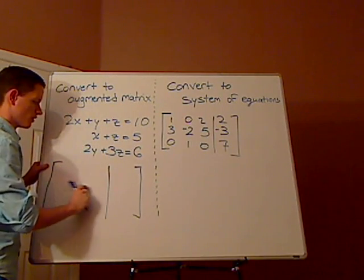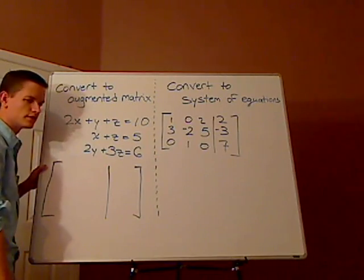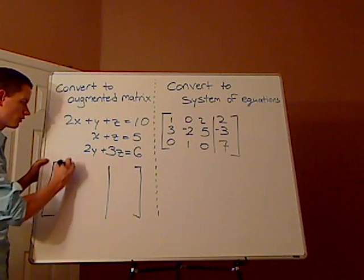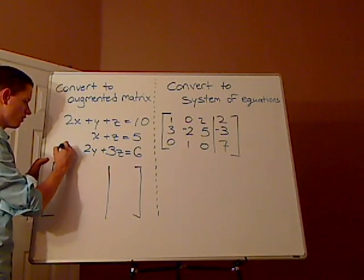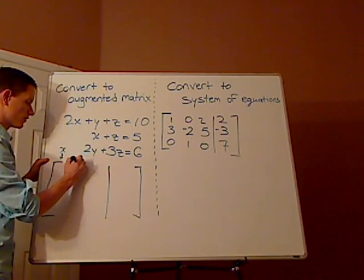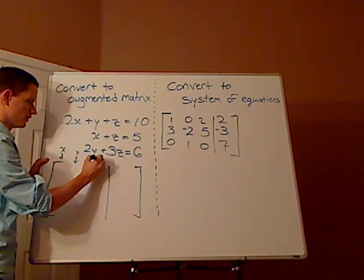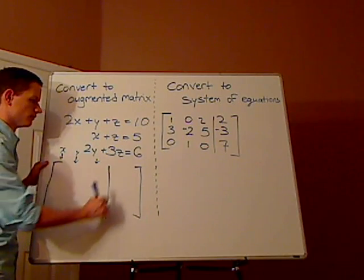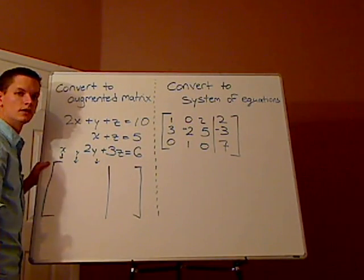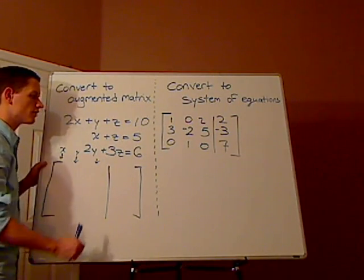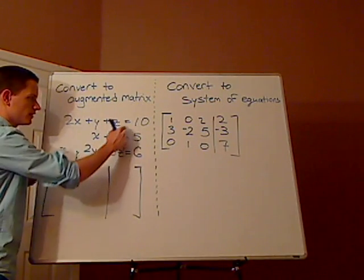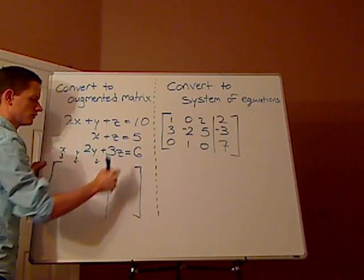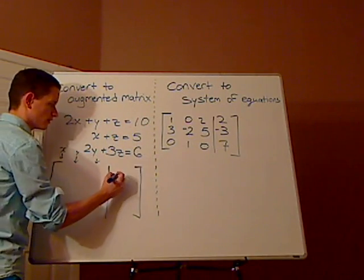So what are you going to put here on this side? All the coefficients. And you're going to make sure all the coefficients line up. So all your x's in the first column, all your y's in the second column, and then all your z's in the third column. And what's going to go here? All the constants. This line separates the equal sign. So it separates all three of these.